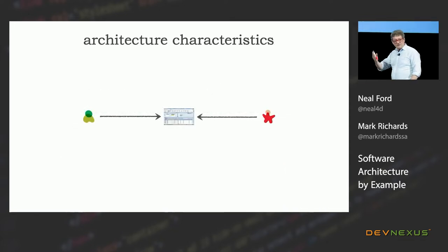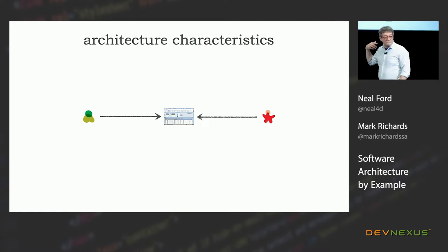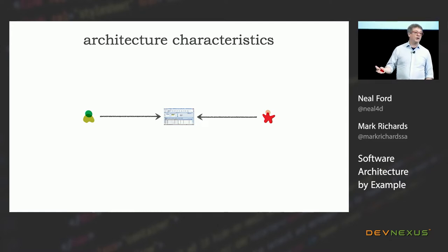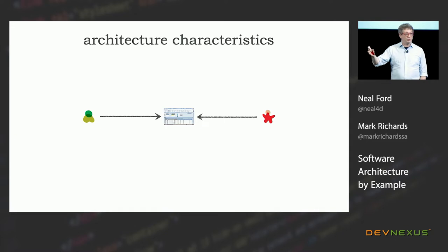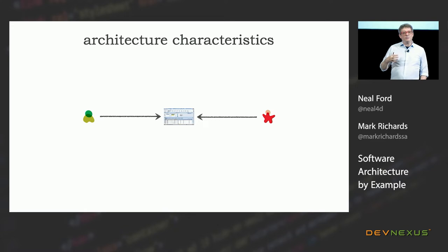We're going to pick the order we chose in our book. The first section concerns determining what your architecture characteristics are. You have a problem — Going Going Gone — you have requirements, and that's absolutely part of your structural design. But you've also got to design for a bunch of other stuff, and that other stuff is what Mark and I refer to as architecture characteristics.